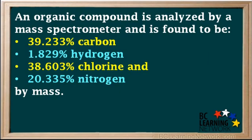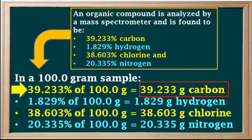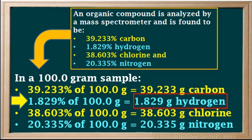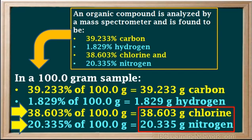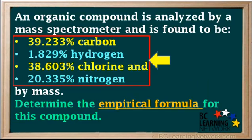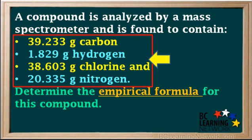Now in this example, we're given the percent masses of elements rather than the actual masses. However, all we need to do is pretend we have a 100 gram sample. In a 100 gram sample, 39.233% of the 100 grams is carbon, so there are 39.233 grams of carbon. Similarly, 1.829% gives 1.829 grams of hydrogen. The grams of chlorine and nitrogen are also equal to their percent masses. So the percent masses can simply be changed to grams.